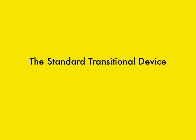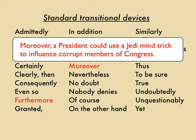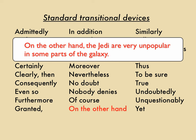The easiest kind of transition is the standard transitional device. Here's a list. These are easy and perfectly acceptable. But remember that you use different transitions in different situations — pay attention to what they mean. You'd use 'furthermore' or 'moreover' if you've already made a point and are about to give another supporting example. You'd use 'on the other hand' when you're going to give a contrasting example or make a point that disagrees with your previous one.